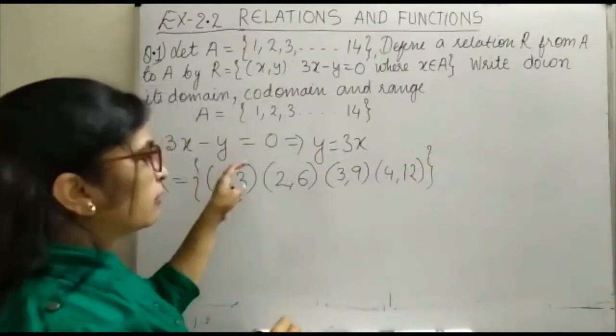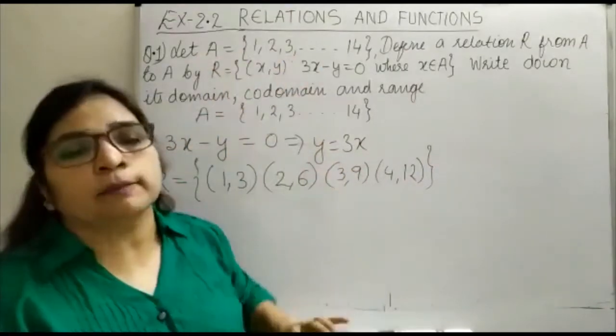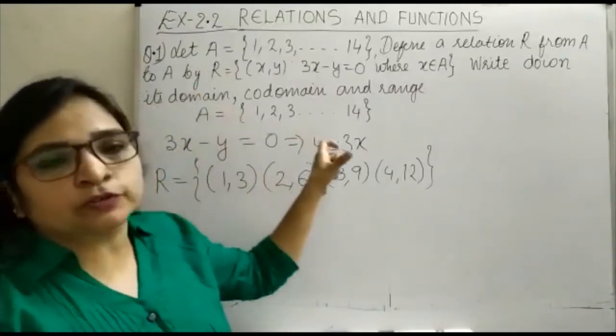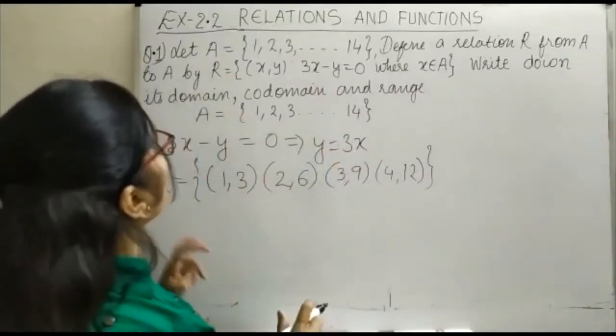Now, अगर आप X की value 5 लेते, Y की value 15 होजाएगी, जो कि set A में नहीं है. इसका मतलब जो हमारे order pairs given condition को satisfy करते हैं, वो यह से 4 order pairs है.